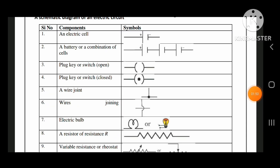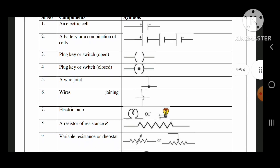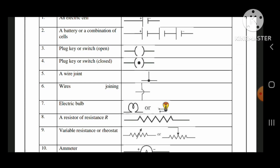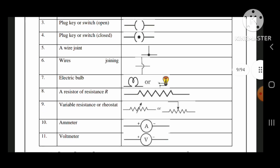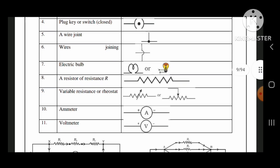Here are the components and the symbols for each. For an electric cell, how it is represented. For battery. Plug key or switch — open and closed. For open, the middle button won't come; for closed, a dot will come. A wire joined, wires joining. Electric bulb. Resistor or resistance R. Variable resistor or rheostat. Ammeter is represented by A. Voltmeter is represented by V.